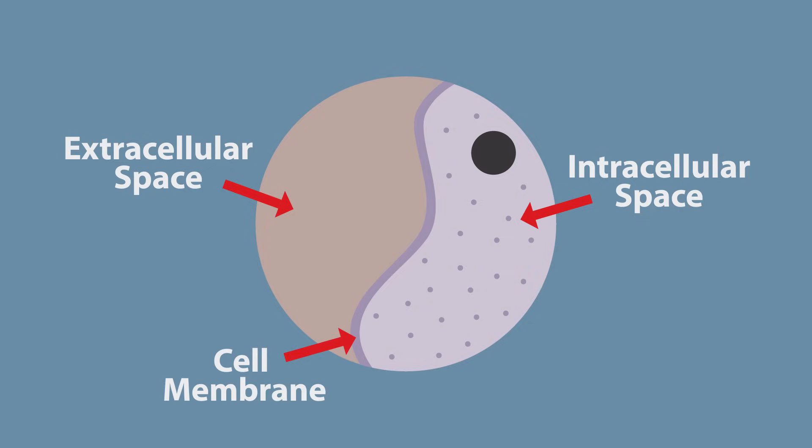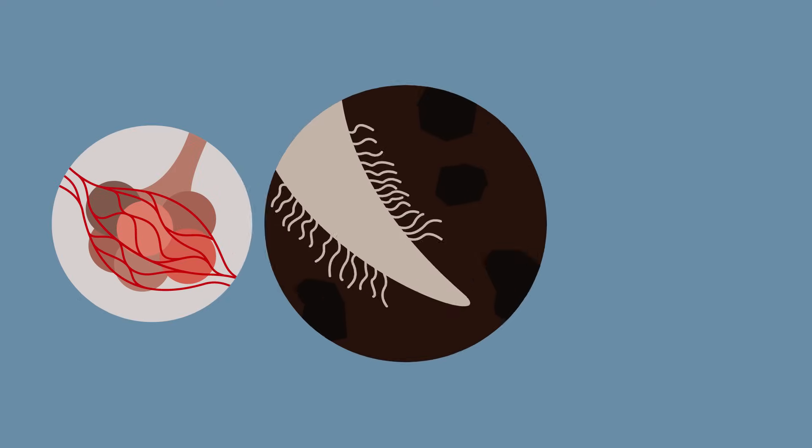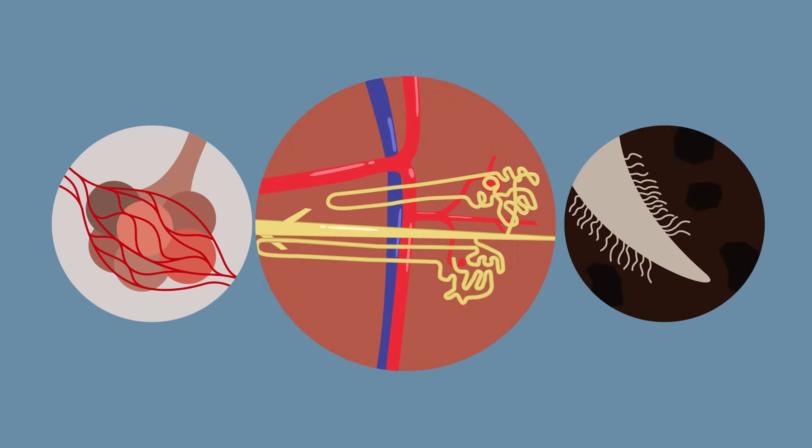To make this exchange as efficient as possible, some organisms have evolved specialized exchange surfaces like the alveoli in the lungs, root hairs in plants, or the nephrons in kidneys.